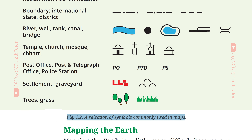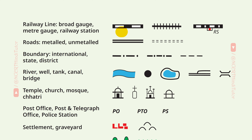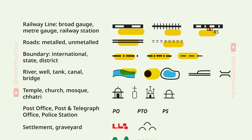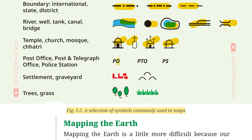Figure 1.2 shows a selection of symbols commonly used in maps. These include: railway line (broad gauge, meter gauge), railway station, roads (metalled, unmetalled), boundary (international, state, district), river, well, tank, canal, bridge, temple, church, mosque, kshatri, post office, post and telegraph office, police station, settlement, graveyard, trees, and grass.